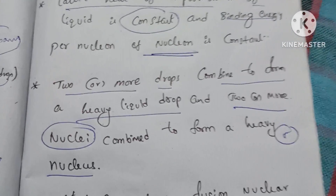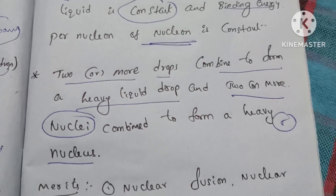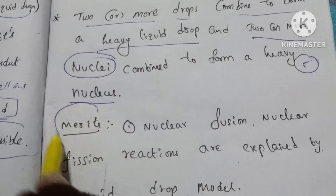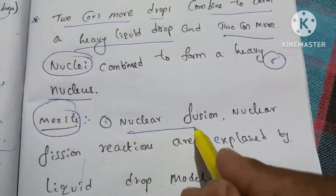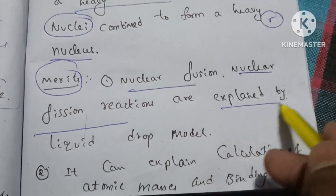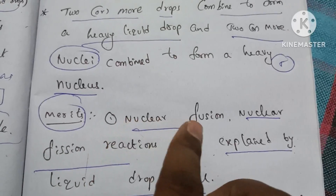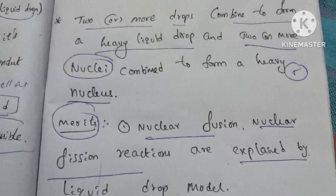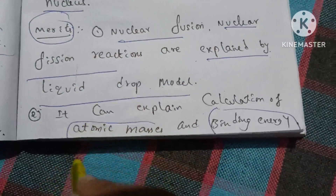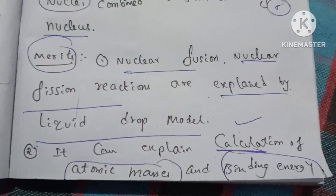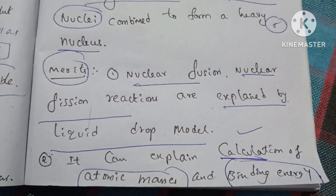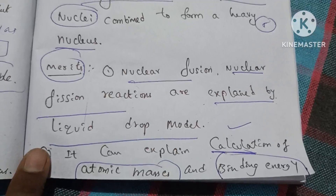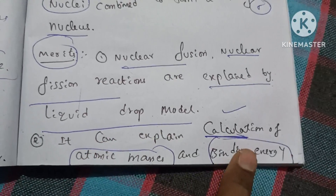We have covered the similarities — approximately 5 to 7 points for the exam. Now, the merits of the liquid drop model: nuclear fusion and nuclear fission reactions are explained by the liquid drop model. Also, the calculation of atomic mass and binding energy can be performed using this model.